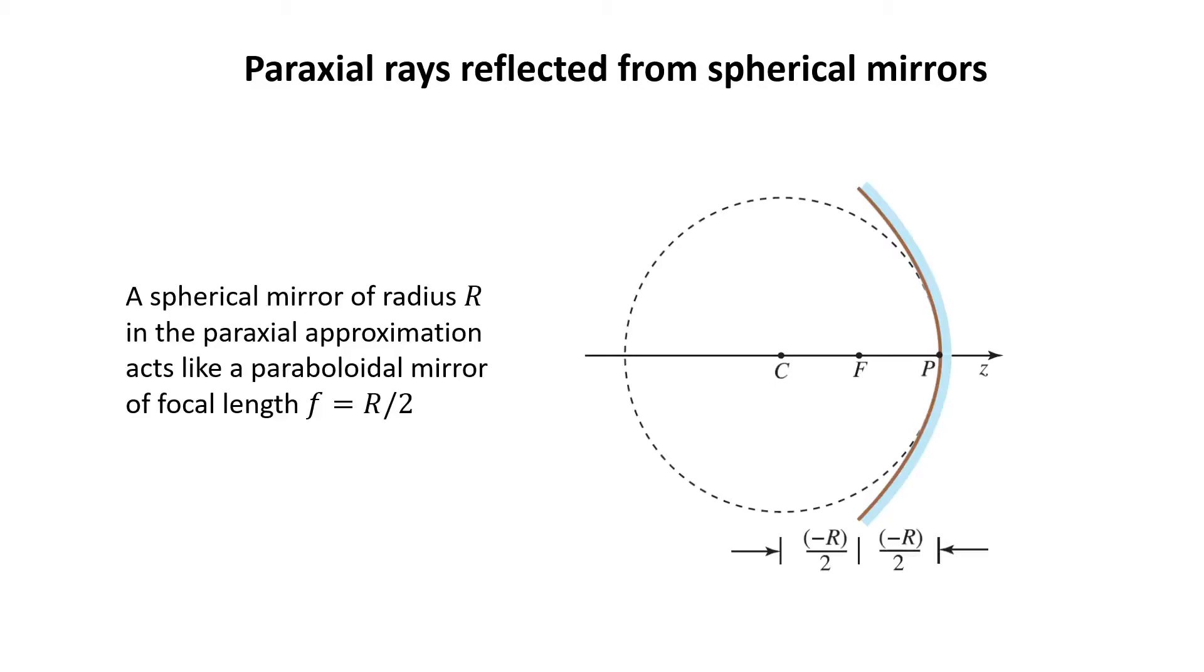Here we see a spherical mirror. A spherical mirror of radius R in the paraxial approximation acts like a paraboloidal mirror of focal length R over 2. The dashed one is a sphere and the red one is a cross-section of the paraboloidal mirror.